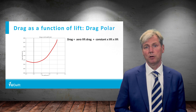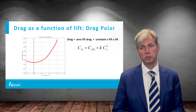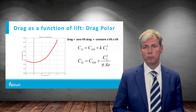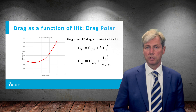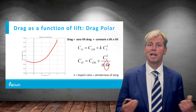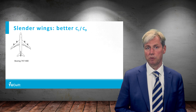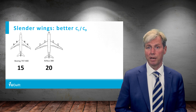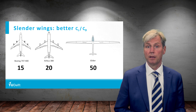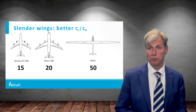Looking more closely at the drag-to-lift ratio mathematically, there is a quadratic formula called the drag polar: CD equals CD_zero plus a constant times CL squared. That constant includes the character A, which stands for aspect ratio — the slenderness of the wing. A more slender wing means you pay less drag for the lift. The Boeing 747-400 achieves a factor of 15 times more lift than drag; the A380 achieves the example value of 20. Gliders have extremely slender wings and reach a factor of 50 — 50 times as much lift as drag.